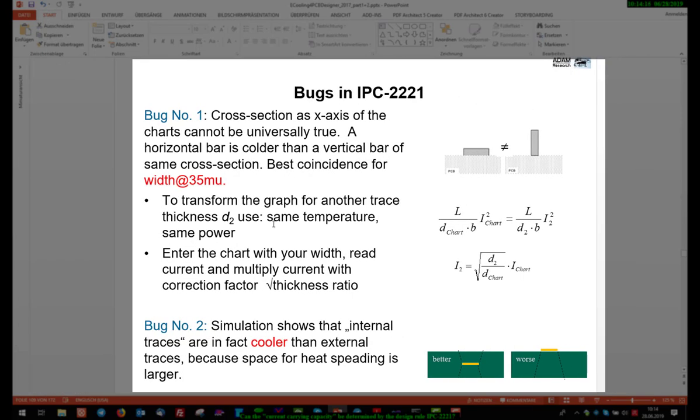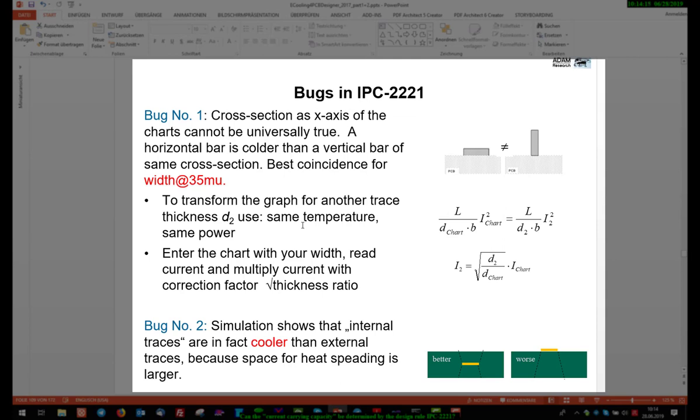There are more strange effects in IPC 2221. Bug number one is the x-axis of the graphs. So the horizontal axis is just the cross section. But the cross section of a trace determines the heating of the trace, but not the cooling of the trace. The cooling of the trace is determined by the footprint area of the trace on the PCB. So if these two traces have the same cross section, the power dissipation is identical. But this trace, of course, cools better than this trace. There's a way to transform this situation to this situation.